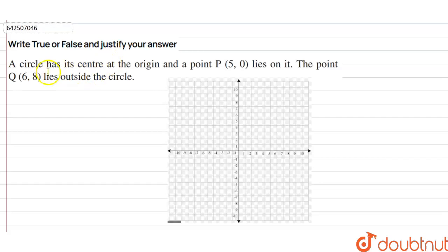Hi students, our question here is: write true or false and justify your answer. A circle has its center at the origin and the point P(5,0) lies on it. The point Q(6,8) lies outside the circle. True or false?